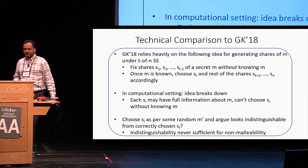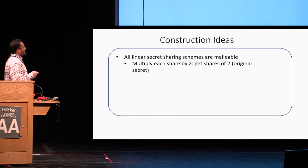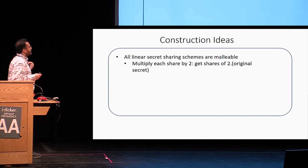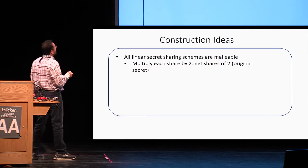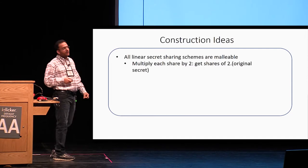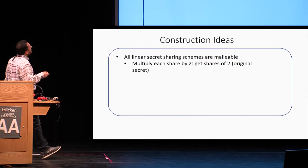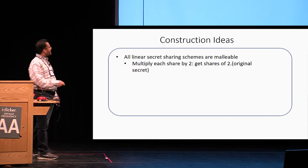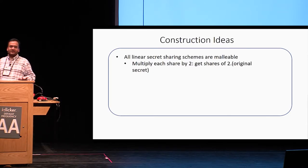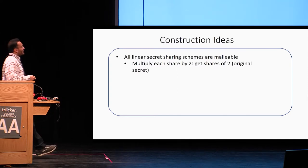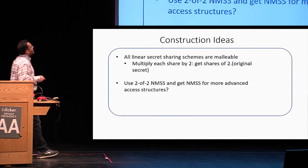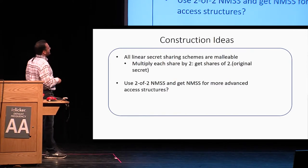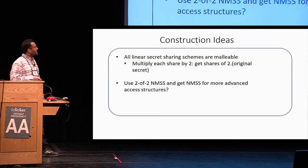Let's try to construct a non-malleable secret sharing scheme for our setting. One idea that immediately does not work is using any kind of linear secret sharing scheme — all linear secret sharing schemes are malleable. You can multiply each share by two and get a share of twice the original message. These ideas are beautifully exploited in secure multiparty computation, but for us it's all bad news. Instead, we will use two-out-of-two non-malleable secret sharing, which is known, to get non-malleable secret sharing for more advanced access structures.